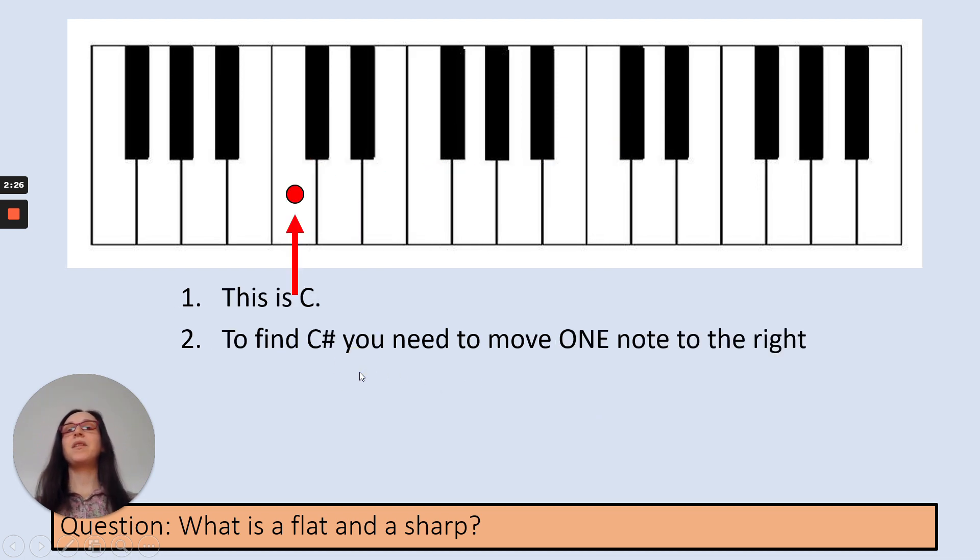Okay, so this is C, to the left of the two black keys. To find C sharp, you need to move one note to the right, and you play just the black note here. That's your C sharp key.